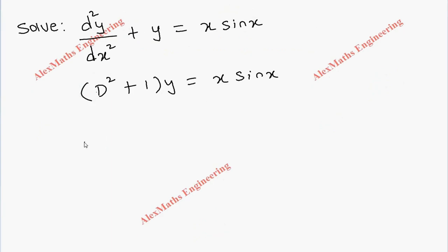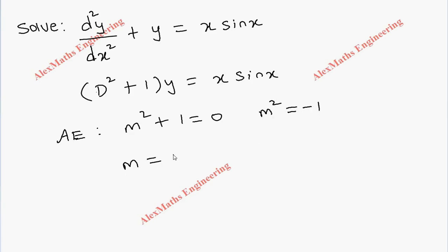As a first step, we write the auxiliary equation, which is m² + 1 = 0. From this, m² = -1, and the value of m is ±i. This is of the form α ± iβ; by comparison, α = 0 and β = 1.